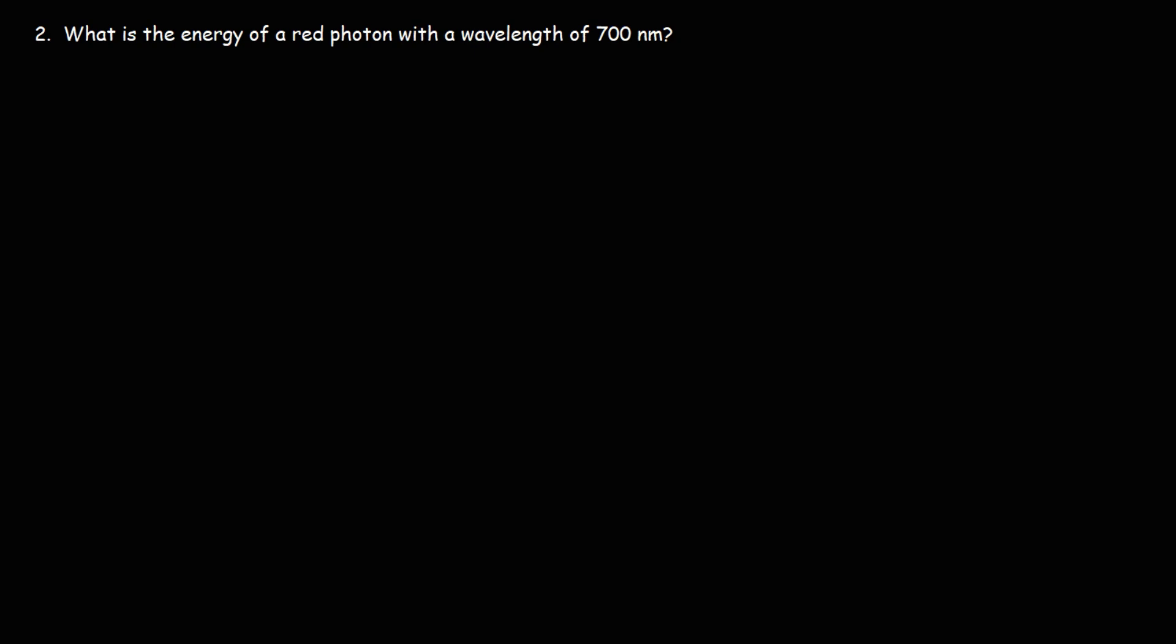Now, what is the energy of a red photon with a wavelength of 700 nanometers? Whenever light has a wavelength of about 700 nanometers, it's going to appear red.